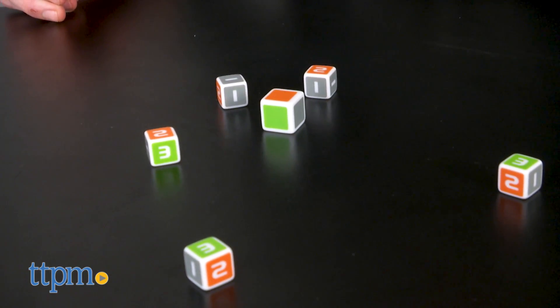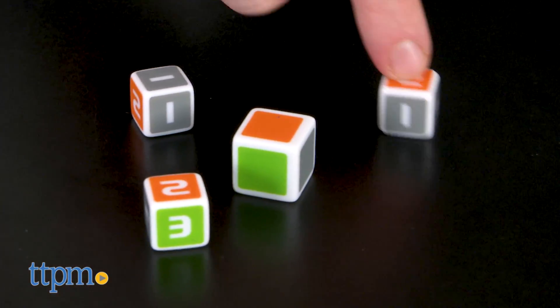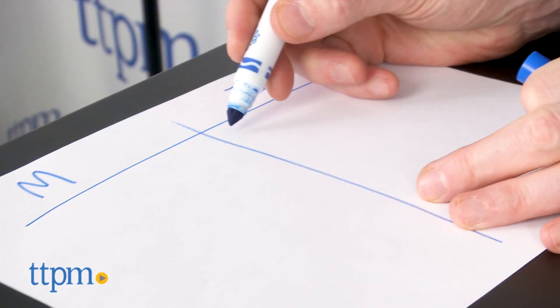The orange side of the dice are worth two points and the green side is worth three points. But the higher the number, the lower your chances.